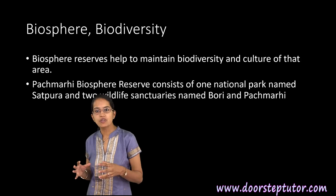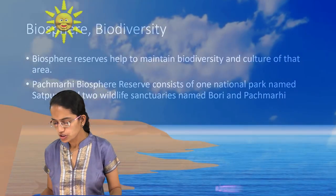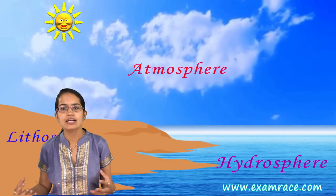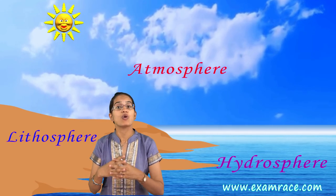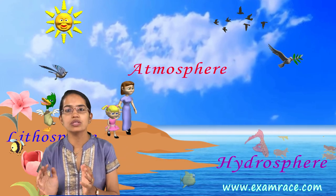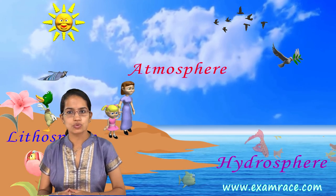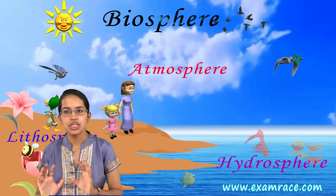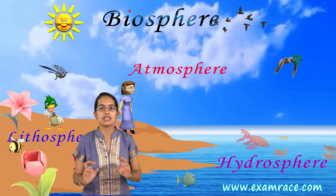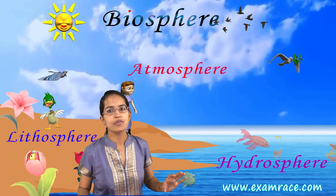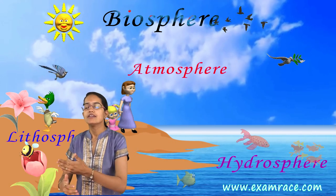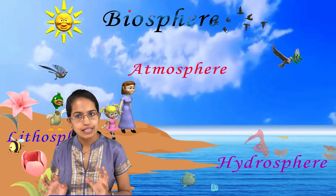Biosphere is simply an interaction of the three spheres: hydrosphere, atmosphere, and lithosphere — that is water, air, and land. Once these three interact, a living zone is created, and this living zone is what is known as the biosphere. The biosphere is rich in biodiversity. Biodiversity is the proportion of plants and animals — the flora and fauna — living in a region, with numerous varieties present.